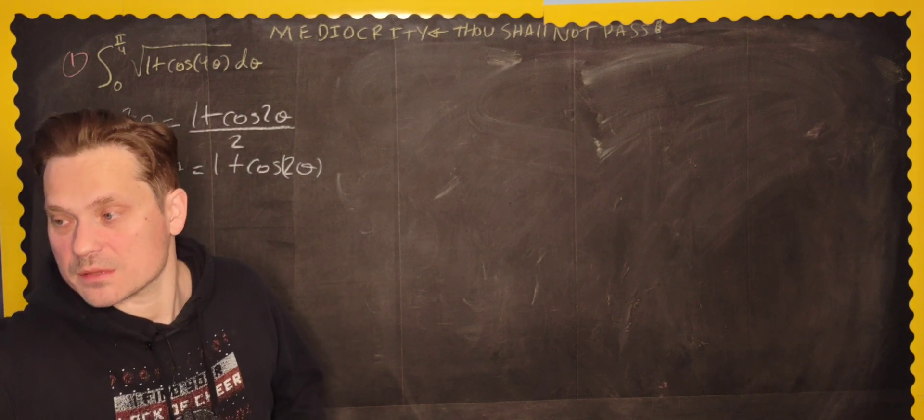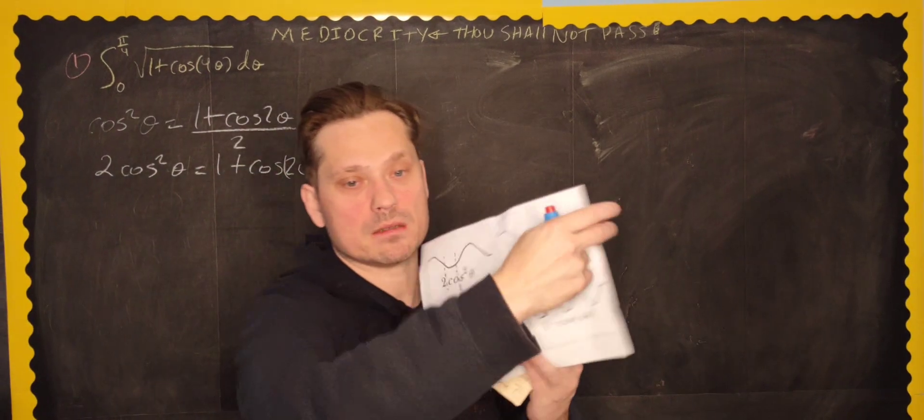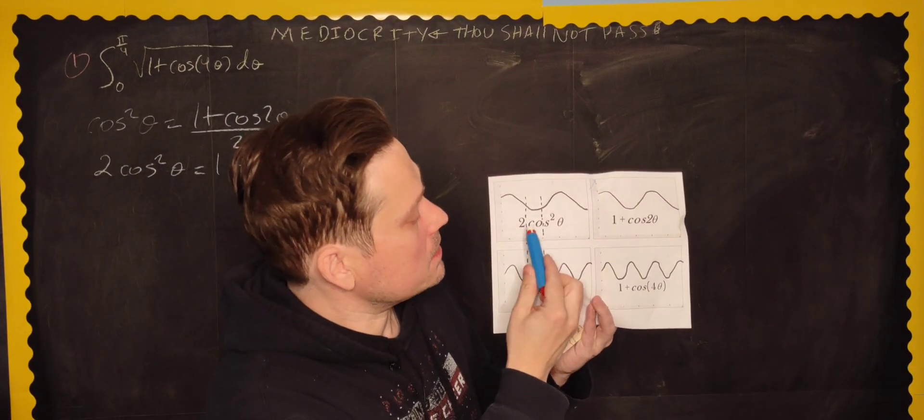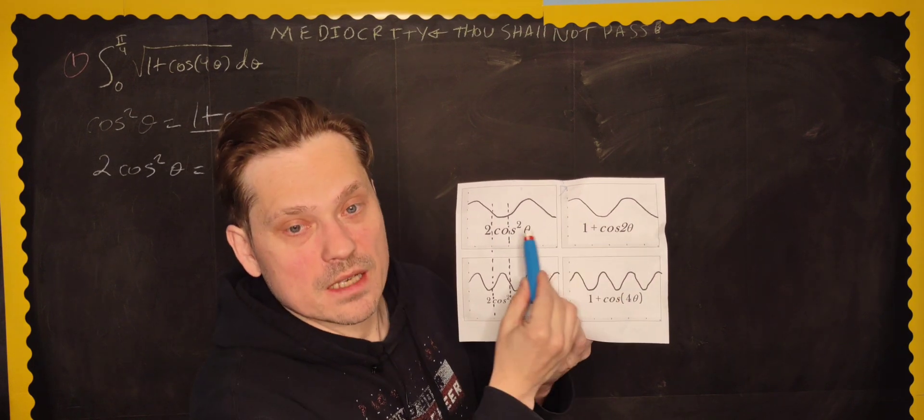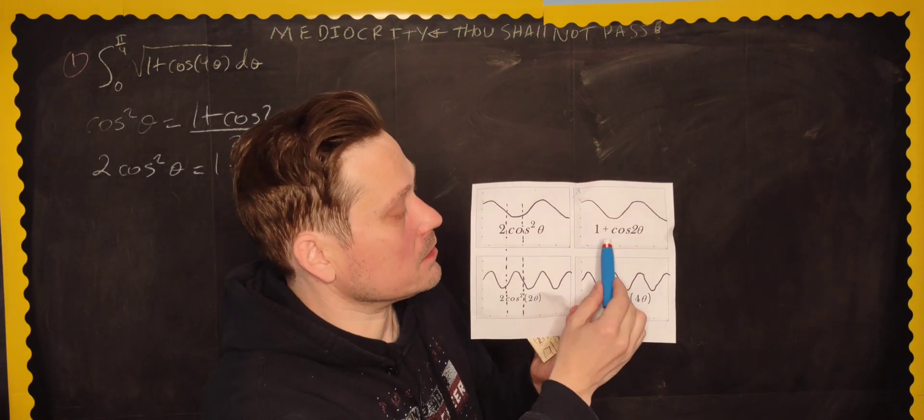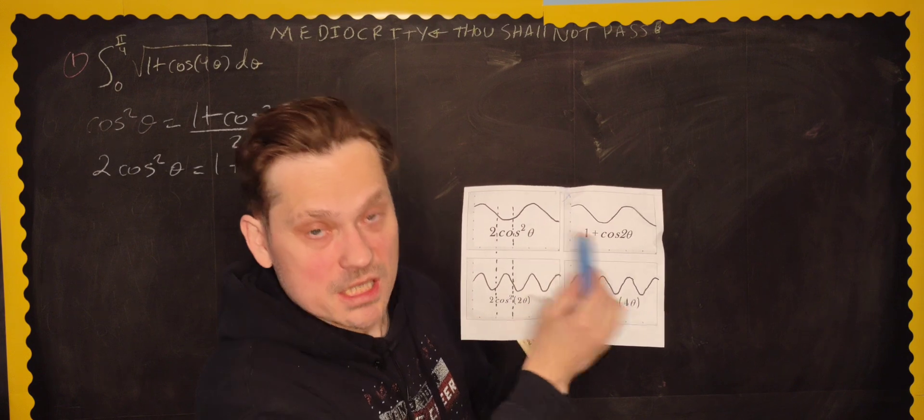Now, what does that actually mean? Well, let me show you here with a graph that might be somewhat helpful. If you look at the top panel here very carefully, friends, look. See, there's 2 cosine squared of theta and then 1 plus cosine 2 theta. These two graphs across the top row will look identical. That means their expressions are interchangeable.